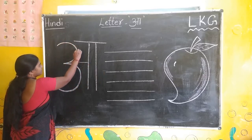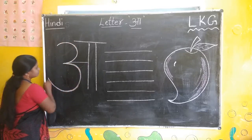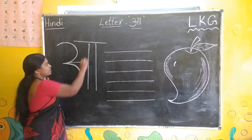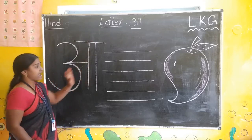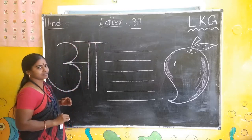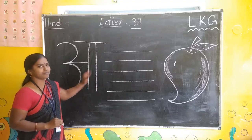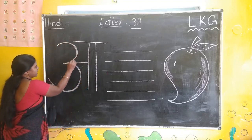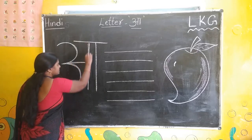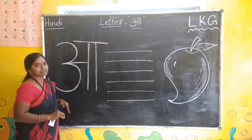Look here. First you have to write one curve, and next one more curve — this is like 3, yes. Then keep here one sleeping line, one standing line, and another one standing line. Here you have to keep a sleeping line. For A you have to keep this line. One more practice — once again we will practice: A. Curve, sleeping line, standing line, one more standing line, and here sleeping line. This is A.